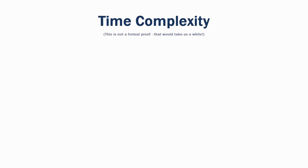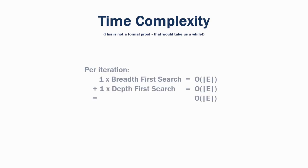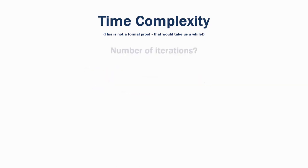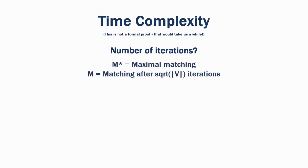Next we will look at the time complexity of the Hopcroft-Carp algorithm. Each iteration performs a breadth-first search and a depth-first search. These searches will inspect at most all the edges in the graph, and therefore take a maximum time complexity of O(E), where E is the number of edges. Next we need to calculate the maximum number of iterations. Before we begin, we shall let M* be a maximum matching, and M be the matching after √V iterations.